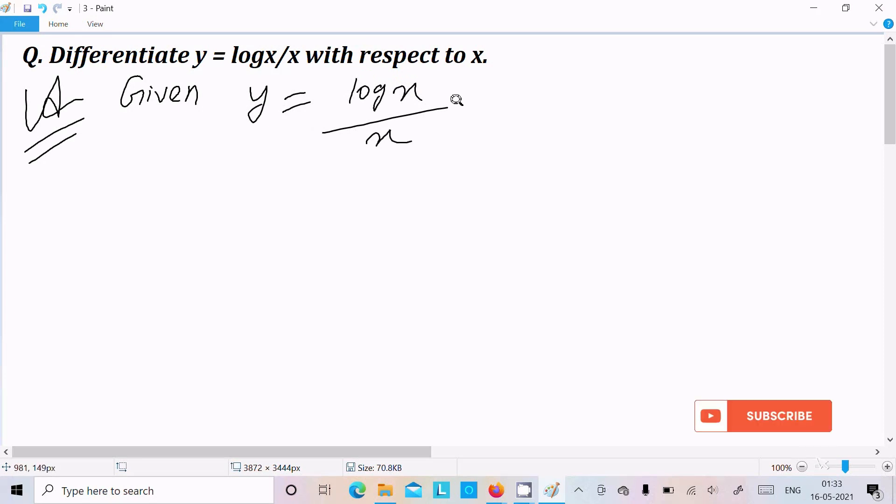Now thereafter, this is in the form of u over v, so here I am going to use the quotient rule.